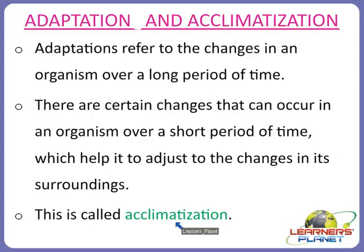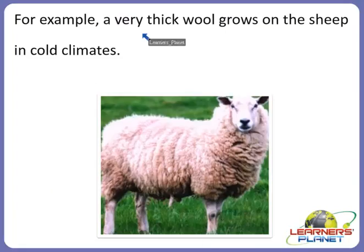This term is called acclimatization. Acclimatization refers to the changes in an organism over a short period of time, just to adjust to the environment when the environment or temperature changes for a short period. For example, a very thick wool grows on the sheep in cold climates, while in hot climates not as much thick wool grows. This is called acclimatization.